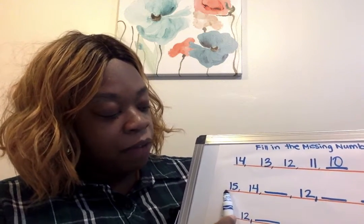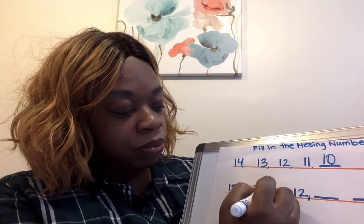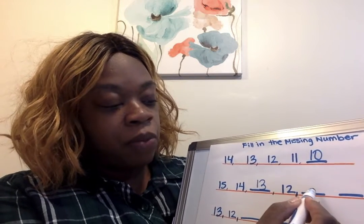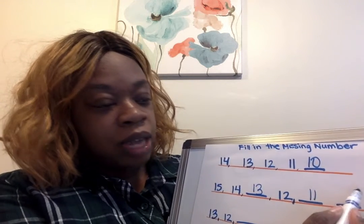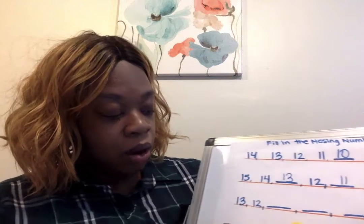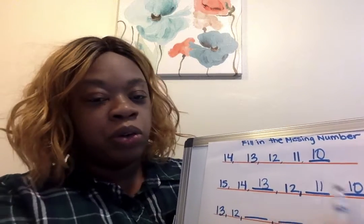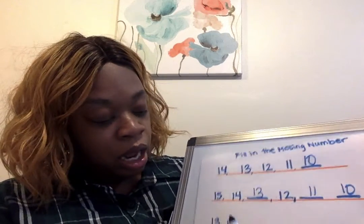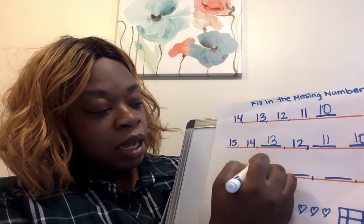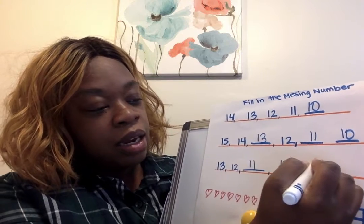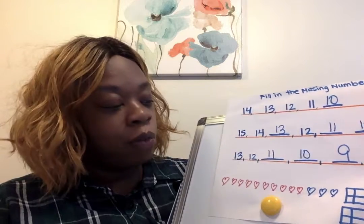Now here we're missing some different numbers. We have 15, 14 — what number goes here? 13 — and then we have 12 — what number goes here? 11 — and then what number goes next? 10. You guys know how to do this. We practiced this yesterday, counting backwards. Now we're making sure we're doing it in a linear configuration. Let's count: 13, 12, 11, 10, and 9. This is also a review of one less.